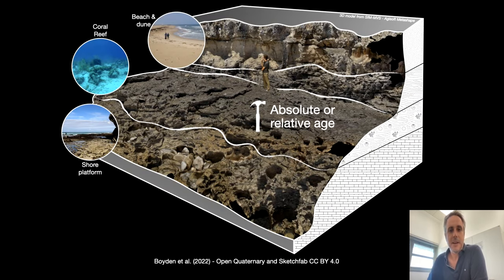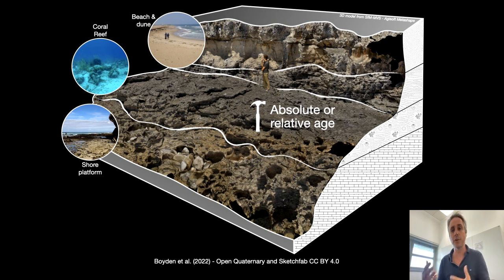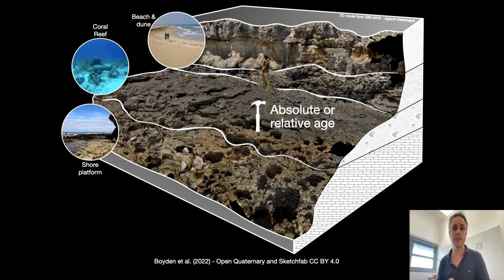Just to remind everybody what we talk about when we talk about sea-level proxies in the field — direct proxies of sea-level — this is what we talk about. This is a 3D model done by one of my postdocs, Patrick Boyden, of an outcrop in Madagascar. It shows a very nice shore platform to beach deposit sequence passing through a reef development stage. What we try to do is connect the paleo environments to the modern ones.